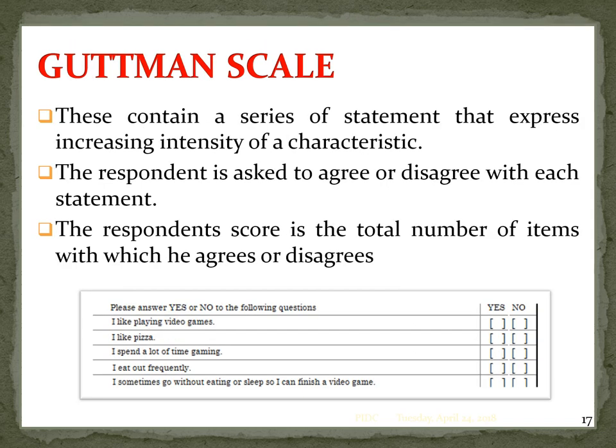The Guttman scale contains a series of statements that express increasing intensity of a characteristic. The respondent is asked to agree or disagree with each statement, or answer yes or no. The respondent's score is the total number of items with which they agree.